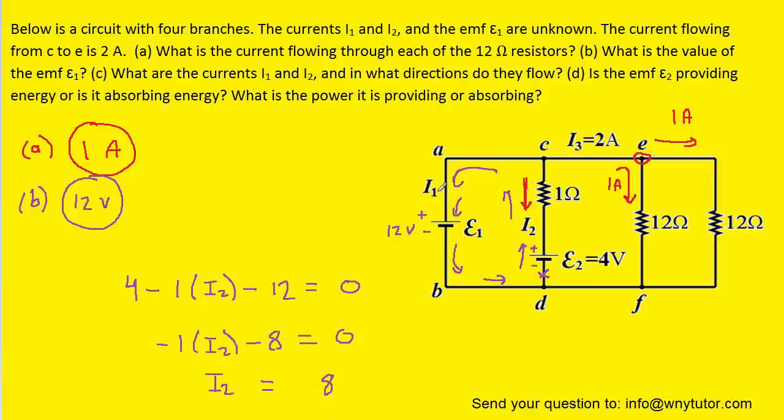We can now easily find the current marked I1, and to do that, we can draw the direction of the current. Again, we might need to guess as to the direction, but eventually we'll be able to figure out if it's correct. Let's just say that I1 is flowing in this direction.